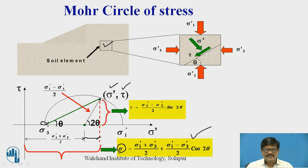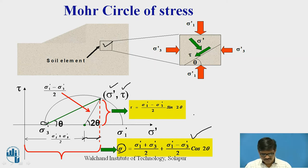In the same way, the vertical side of the triangle gives the shear stress, which is the sine component of the diagonal. So shear stress = (sigma 1 − sigma 3)/2 × sin 2theta. In this way, normal stress and shear stress can be derived from the Mohr Circle.